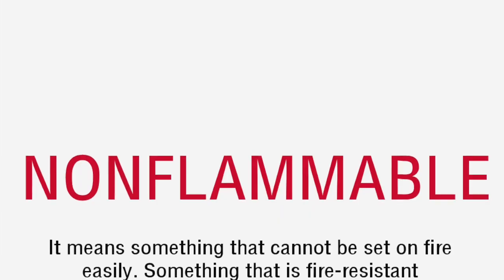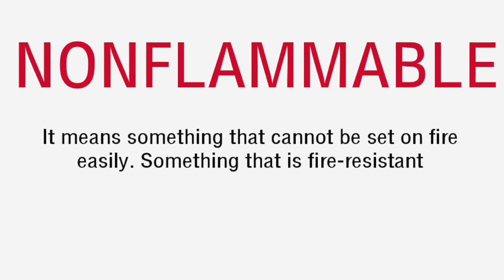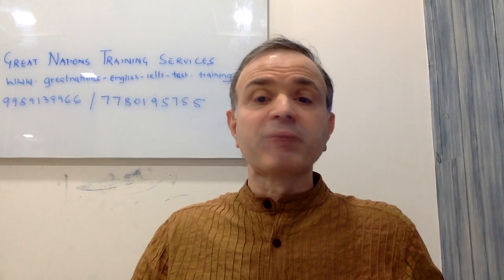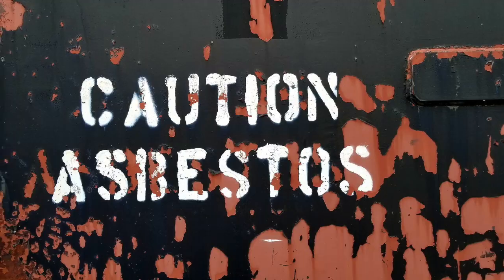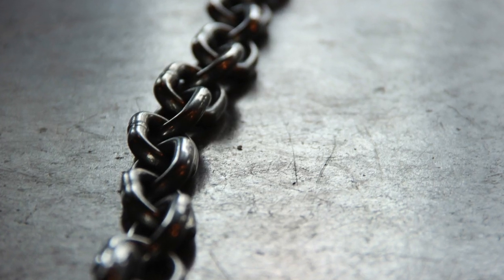The word for things that don't catch fire is non-flammable. Non-flammable means things that don't catch fire — it also means fire resistant. Some examples are asbestos, glass, and steel or metal. So the opposite of both flammable and inflammable is non-flammable.